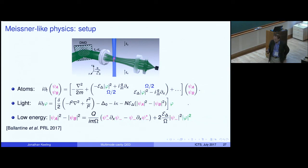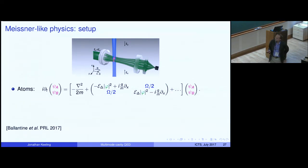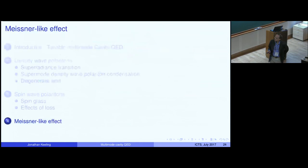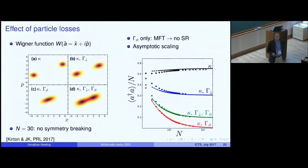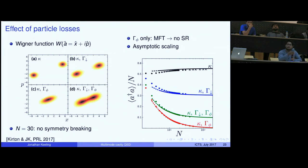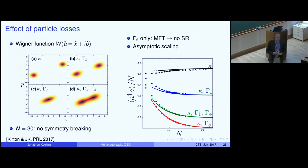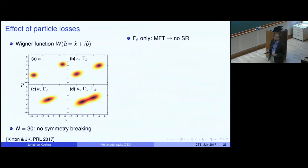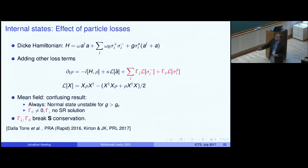Q&A: Asked whether the result that dephasing suppresses the superradiant phase transition holds for both the bare Dicke model and the Raman-transition version that includes the dispersive U term (the a†a coupling). The answer is that this was looked at only in the bare Dicke model. There is no known reason to believe the U term would restore the phase transition, but this has not been carefully investigated.